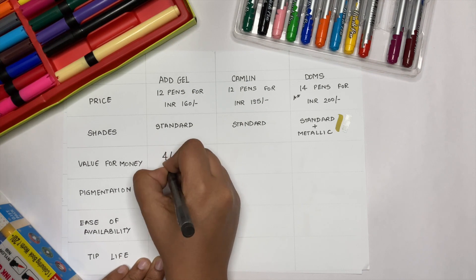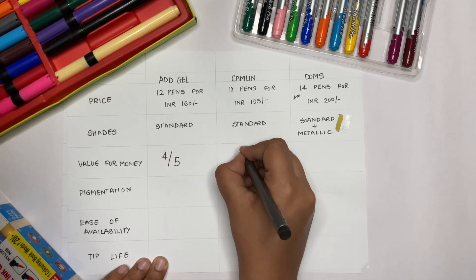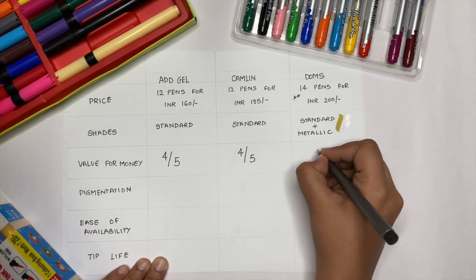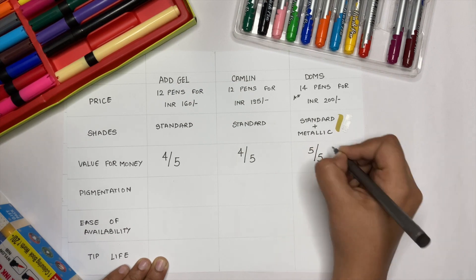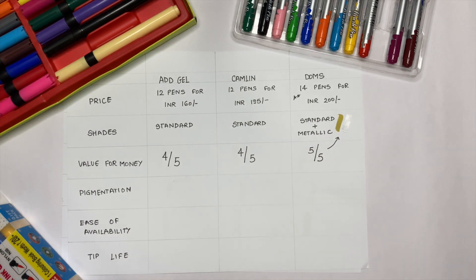When it comes to value for money, I rate ADD Gel 4 on 5, Camlin again 4 on 5, while DOMS 5 on 5 for throwing in those two metallic shades.